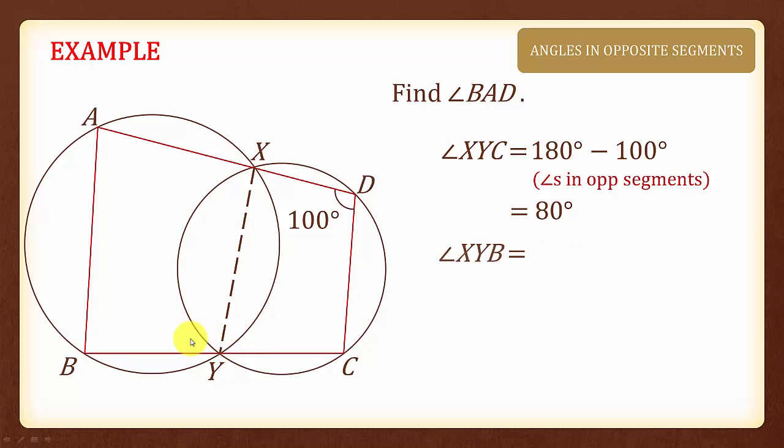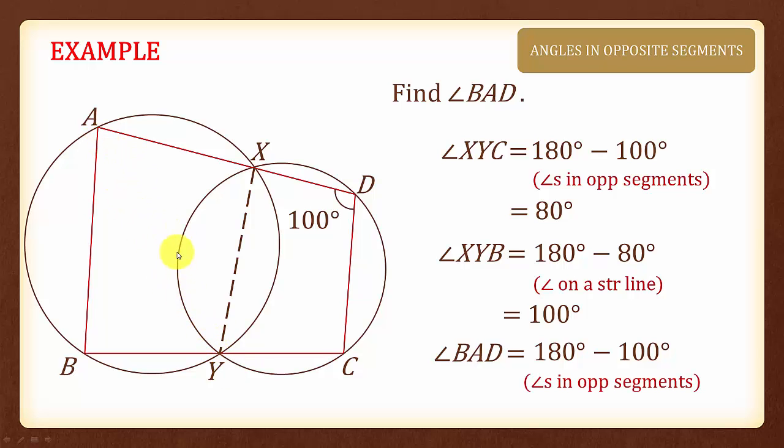Angle XYB will be equal to 180 degrees minus 80 degrees because of angles on a straight line, and we will have 100 degrees.